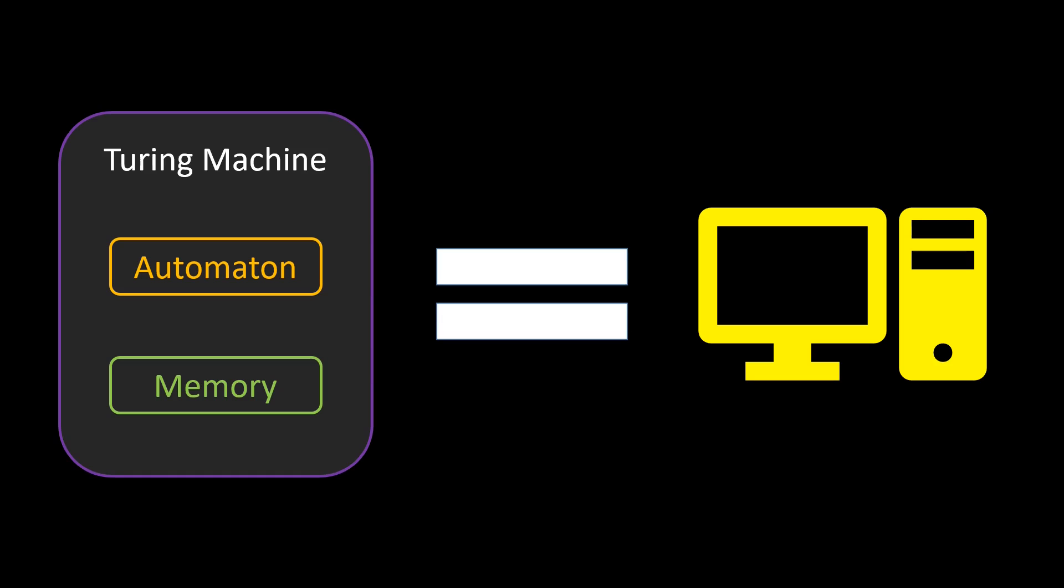Various other versions of Turing machines exist, like Turing machines with multiple tapes. It can be shown that all these different versions are equivalent to the single-tape Turing machine in terms of computability.